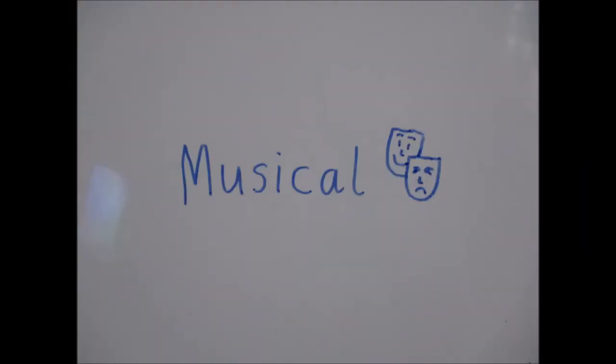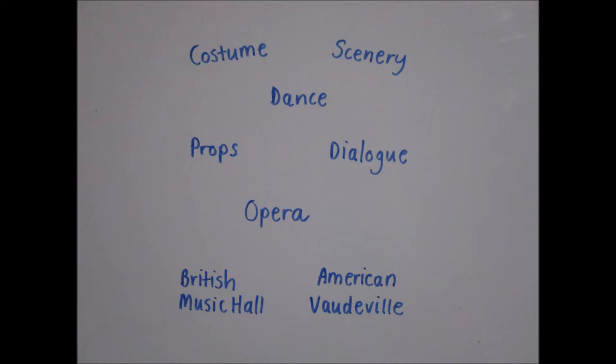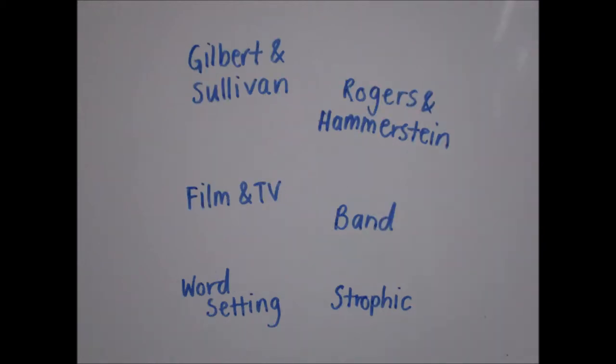Musicals. Musicals are plays with costume, scenery, dance, props, dialogue and of course music. Musicals stem from opera, British music hall and American vaudeville. Famous musical writing pairs include Gilbert and Sullivan and Rogers and Hammerstein. Musicals really took off with film and TV and prefer a band over an orchestra. The songs use word setting and are often strophic in structure.